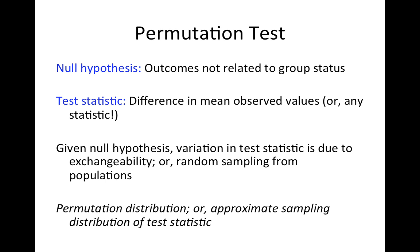Permutation tests are not as well motivated as randomization tests because you didn't actually randomize. But if you have the general idea that you could have allocated units to groups in other ways, and you look at all possible ways you could have done the allocation, that is taking into account possible variation in the test statistic.